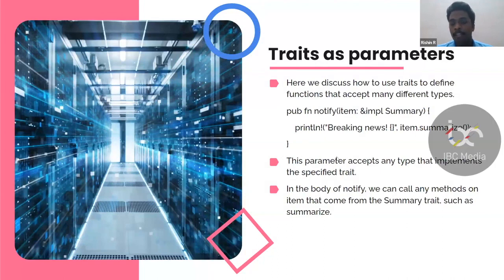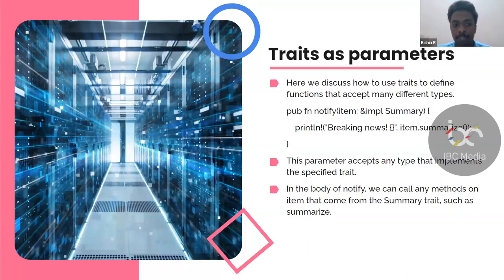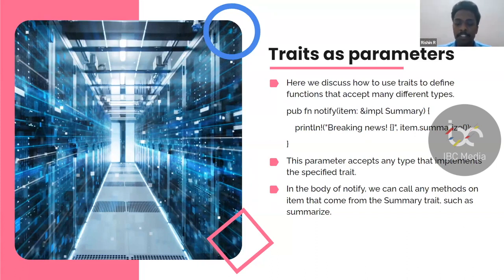Now we will discuss traits as parameters. We use traits to define functions that accept many different types. In this example, I'm going to take an item and pass a trait as a parameter to a particular function, and then use it to call the trait function. You can do it in a similar way too — if you want to take a particular implementation inside a function and manipulate things, you can do so by passing the trait as the parameter.